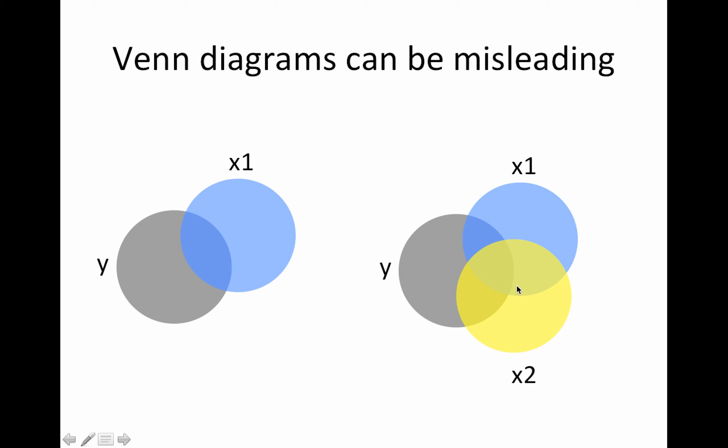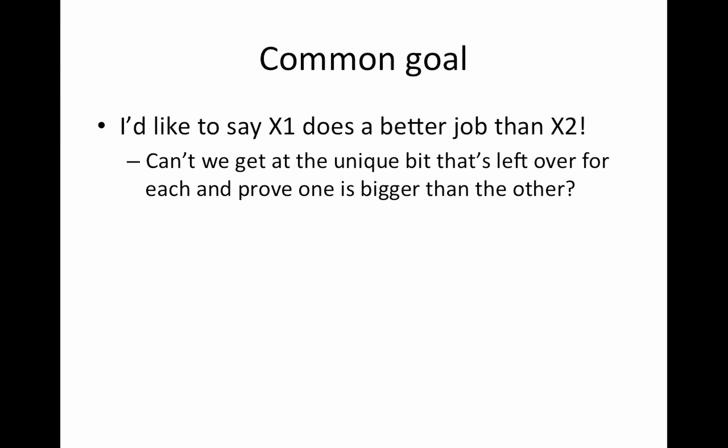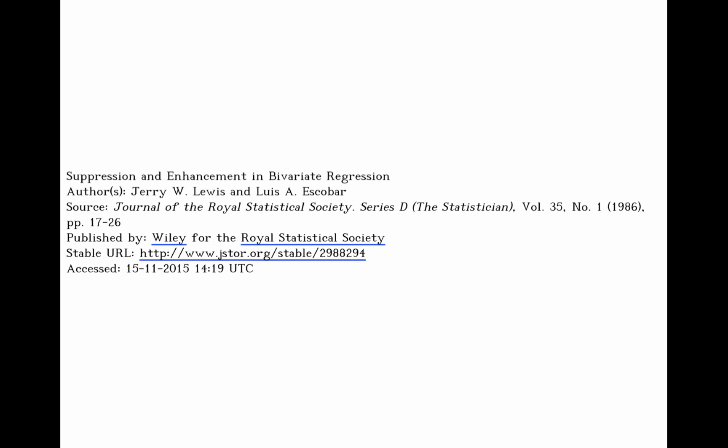This is smaller than this, but what about this part here that overlaps between X1 and X2 and not Y? How is that impacting the coefficients for these bits here? There are a lot of moving parts here. Can we get at that unique bit? This unique bit here and here, and I don't think it makes sense. I will go through these examples to illustrate that.